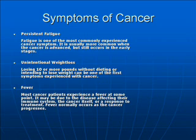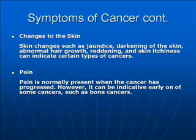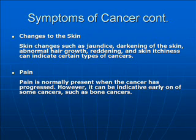Fever: most cancer patients experience a fever at some point; it may be due to the disease affecting their immune system. Changes to the skin — such as jaundice, darkening of the skin, abnormal hair growth, reddening, and skin itchiness — can indicate certain types of cancer. Pain is normally present when the cancer has progressed; however, it can be indicated early on in some other cancers, such as bone cancer.